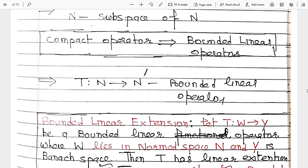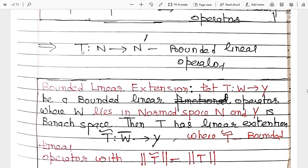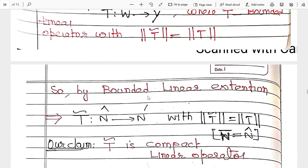Now {p_n} belongs to N-cap, and N-cap is N-bar (the closure). It means {p_n} belongs to N-bar. If {p_n} belongs to N-bar, then by the definition of closure, there exists a vector in N such that the distance between {p_n} and that vector approaches zero. There exists a sequence {q_n} from N such that we take {p_n^hat} from N-cap — in order to make it clear, we take {p_n} from this N. There exists a sequence {p_n} in N such that the norm ||p_n^hat - p_n|| approaches zero. This is by the definition of closure — this is equation (1).